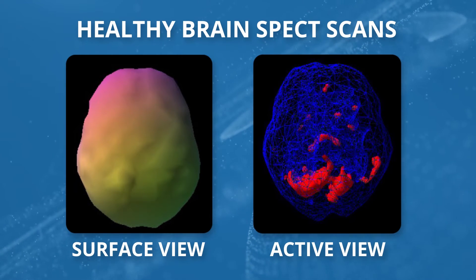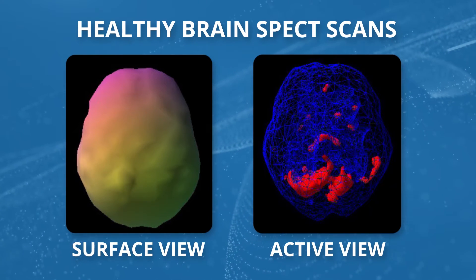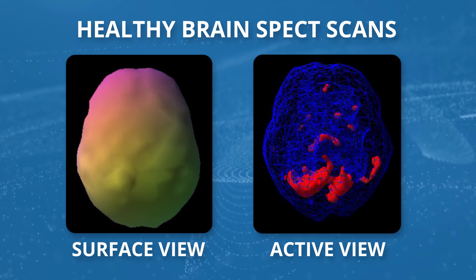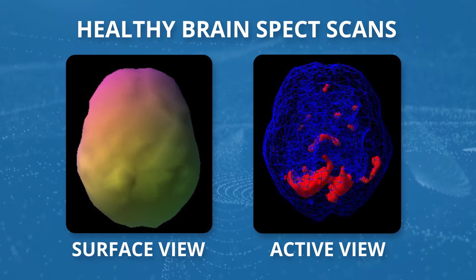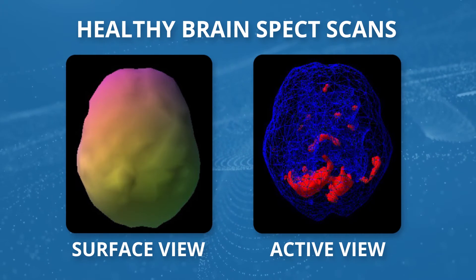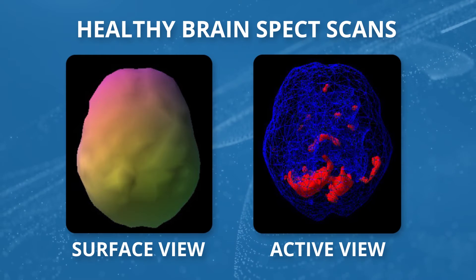Our job is to balance the brain. The image on the left — we're looking down from the top — shows full, even, symmetrical activity. The color is not important; it's the shape that matters, and it helps us see healthy and low areas of activity. The image on the right is what we call our active scans, where blue is average activity and red is the most active parts of the brain. Typically in a healthy scan, they're in the back bottom part of the brain — the cerebellum — which is 10% of the brain's volume but has half of the brain's neurons, making it typically the most active part on SPECT.